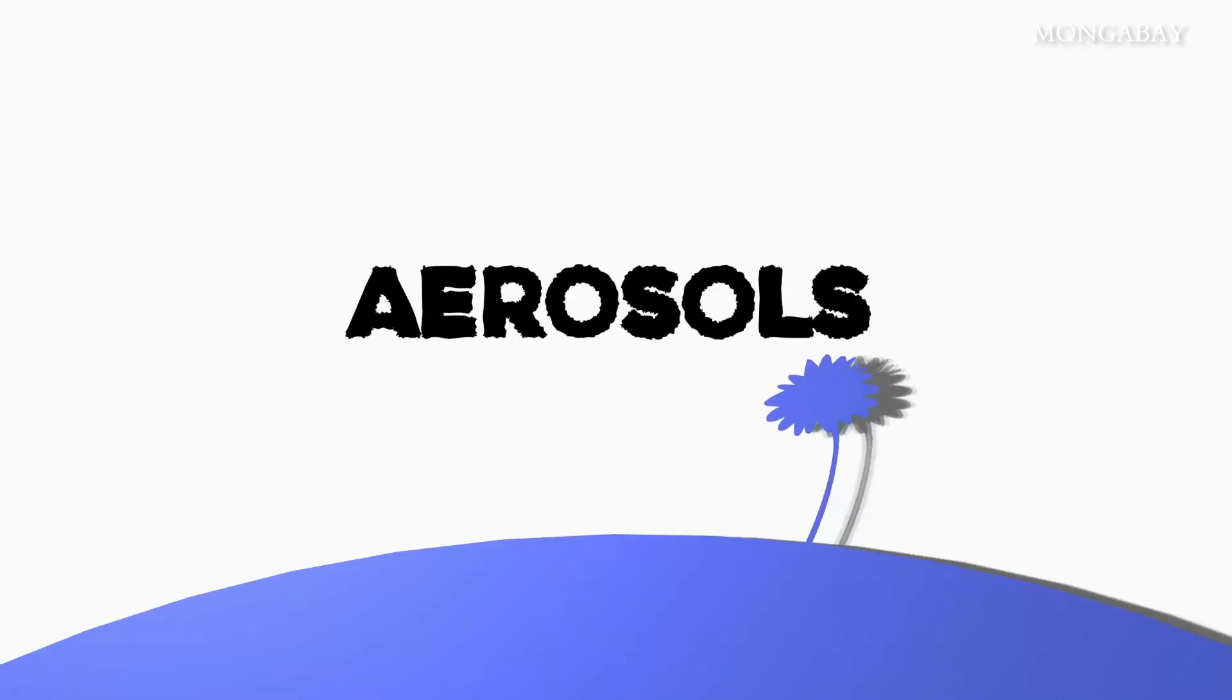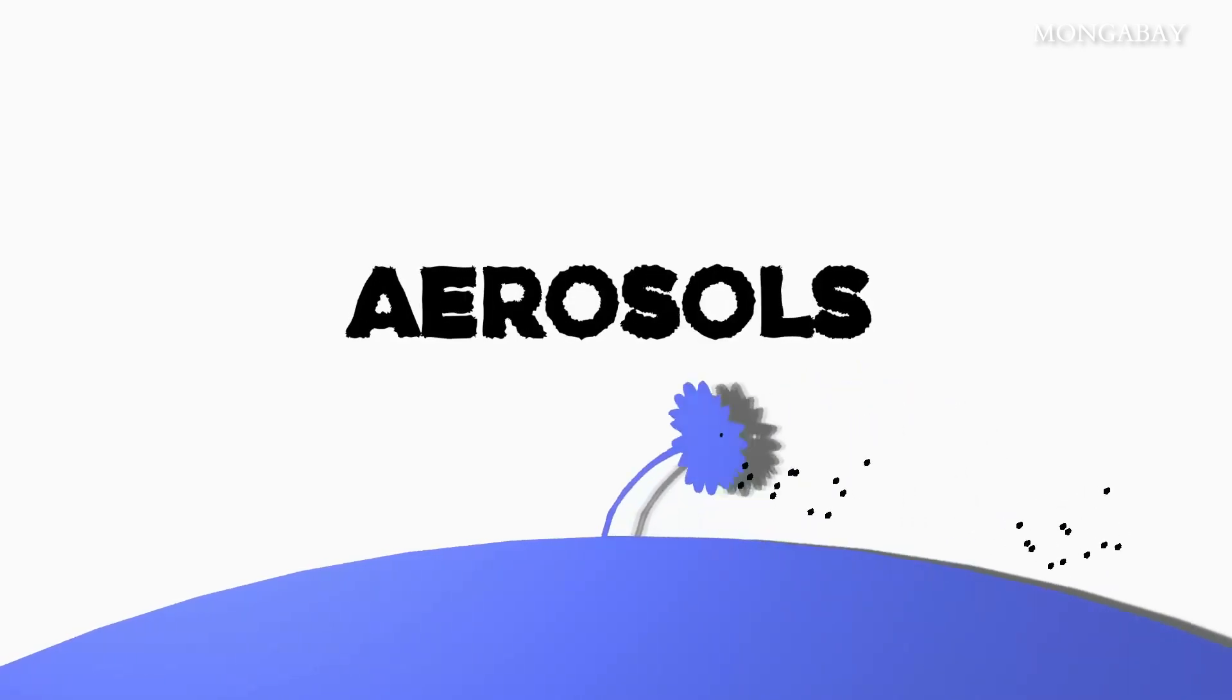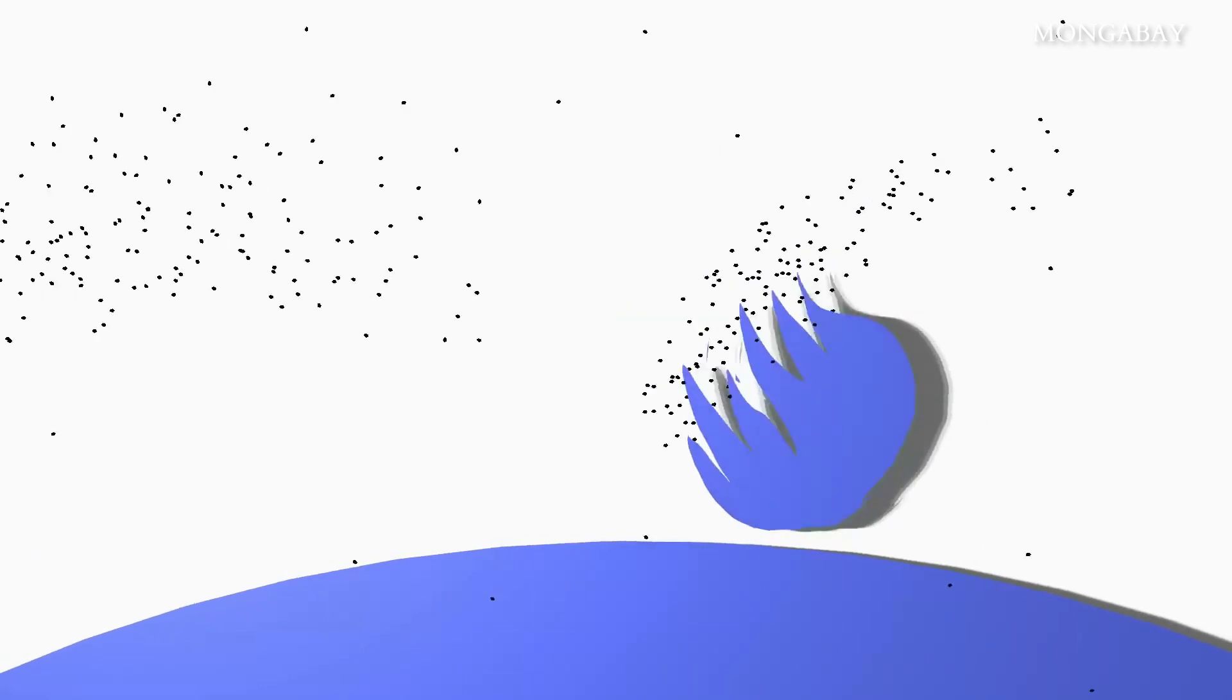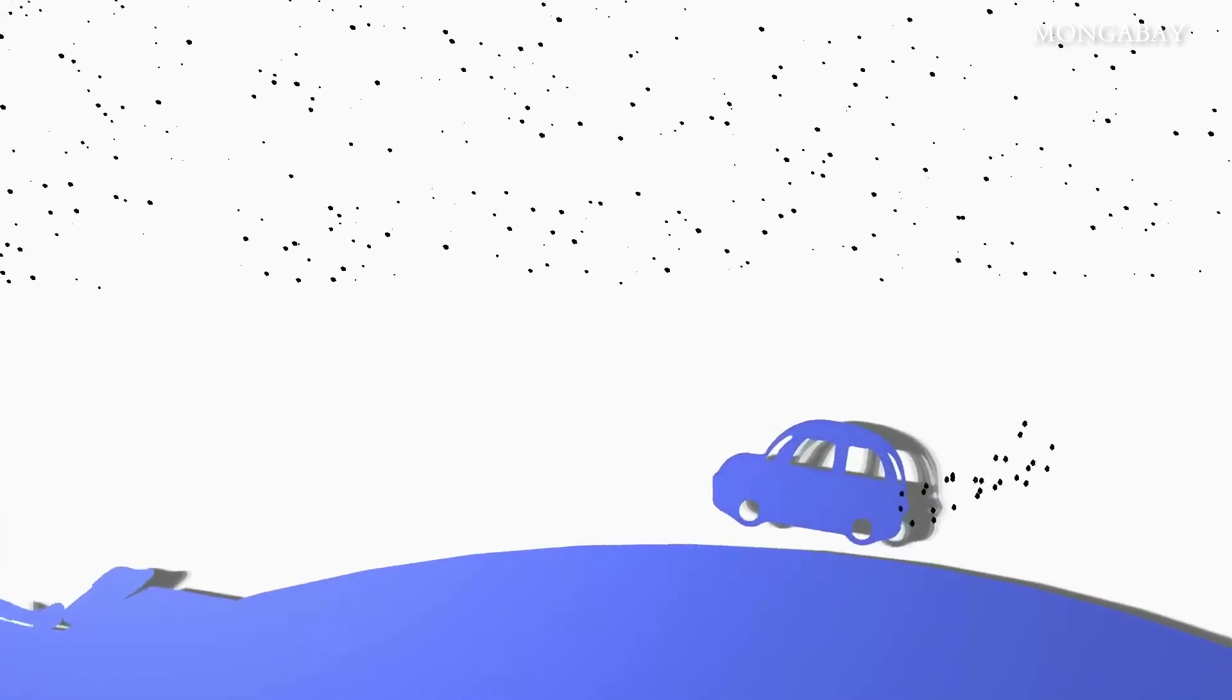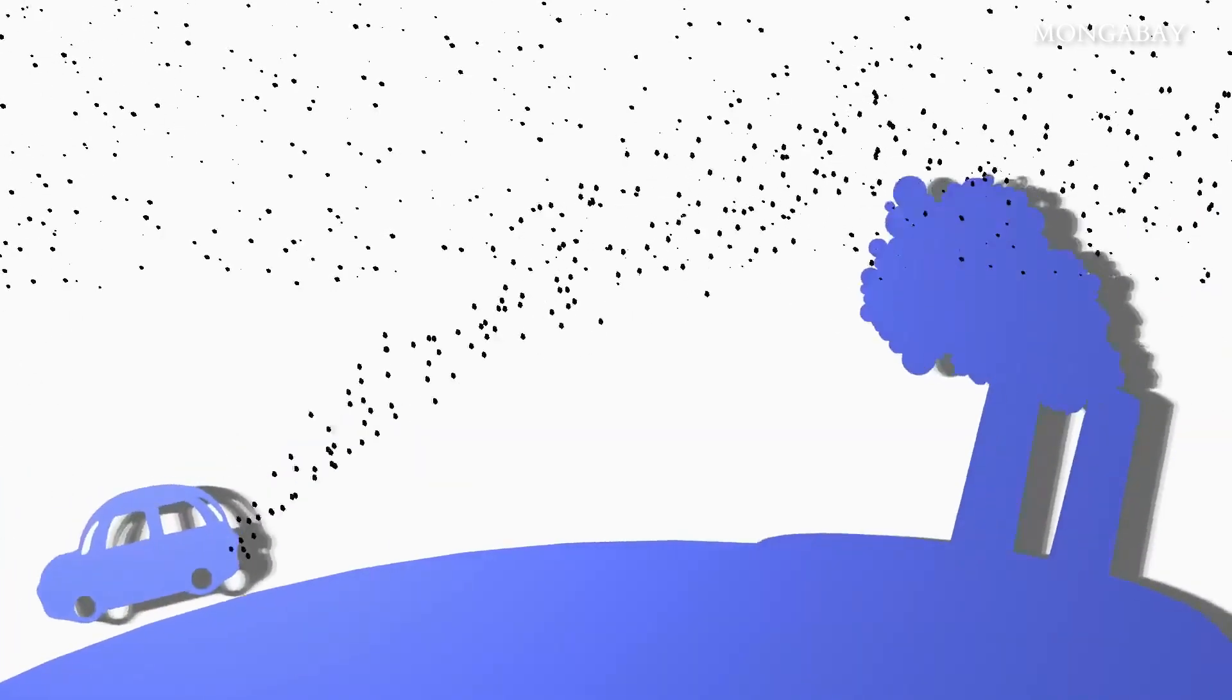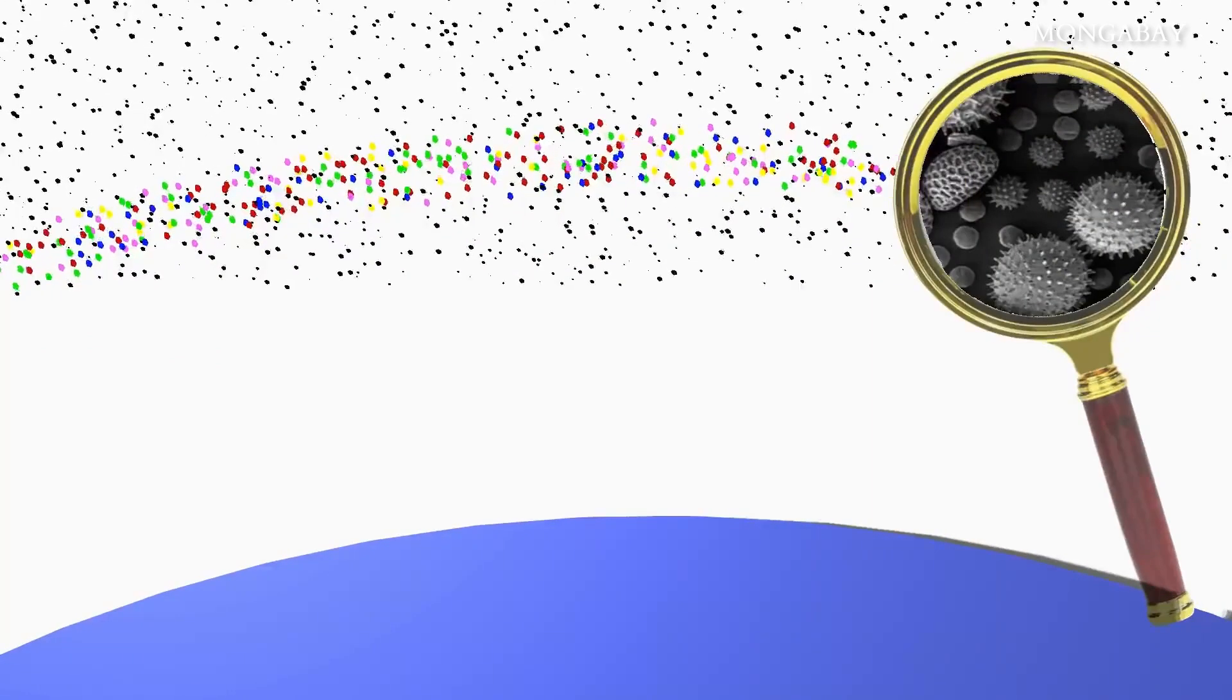Aerosols are tiny particles, either solid or liquid, that float in the air. They can be spores of pollen, black carbon often called soot from forest fires, sulfates and sulfuric acid from volcanoes, cars, factories, sea salt freed from the crests of breaking waves, even microfibers from drying clothes. They come in many shapes and range in size from a few atoms across to the width of a human hair.